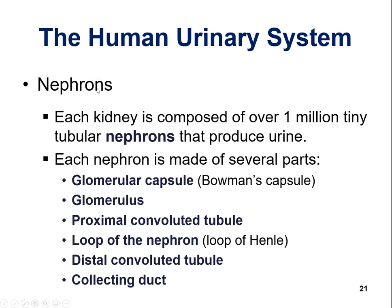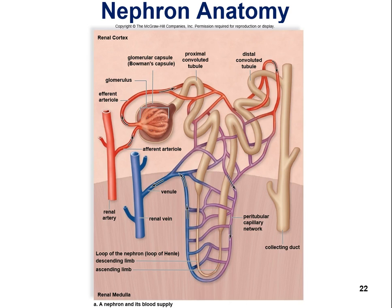When discussing kidney function, focus on the nephron. Each kidney is composed of over one million nephrons — tubular structures, just like excretory structures in planaria and earthworms. The parts of the nephron are: the glomerular capsule (Bowman's capsule), the glomerulus, the proximal convoluted tubule, the loop of the nephron (loop of Henle), the distal convoluted tubule, and the collecting duct. These are the functional units of the kidney.